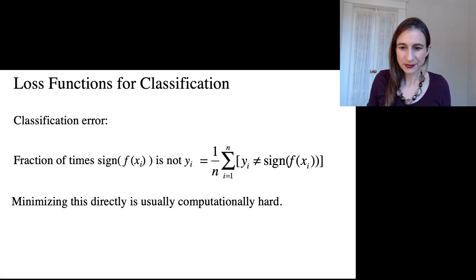Now, minimizing this quantity is usually computationally hard because it's a count of things. It's the count of times that y doesn't equal the sign of f. So people don't usually try to minimize this directly. They do something else, and so I'm going to derive what that is.